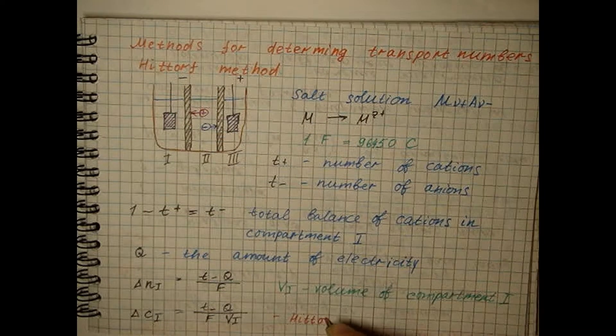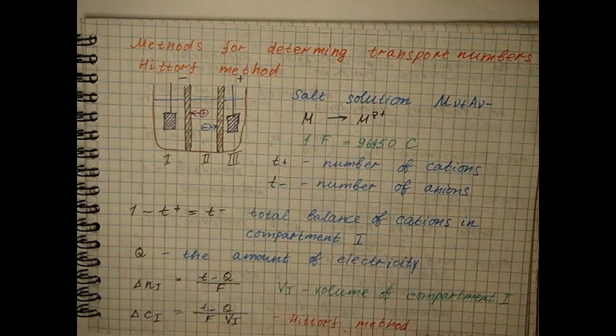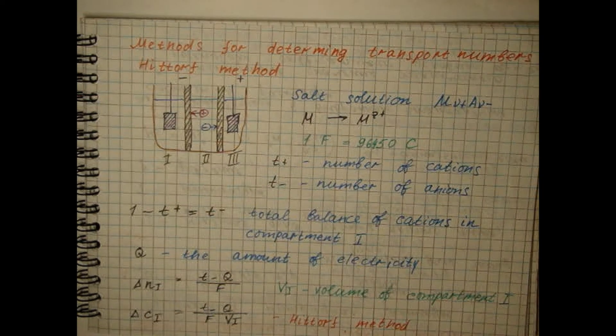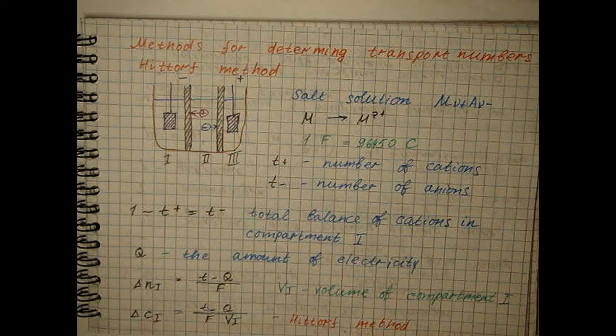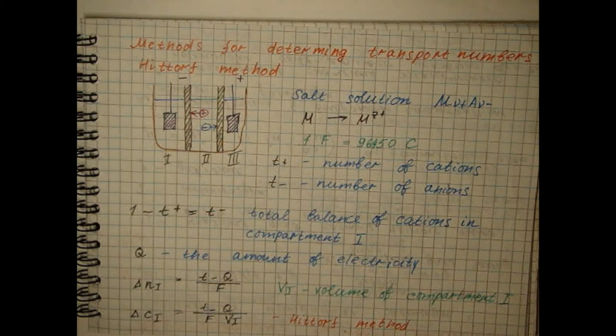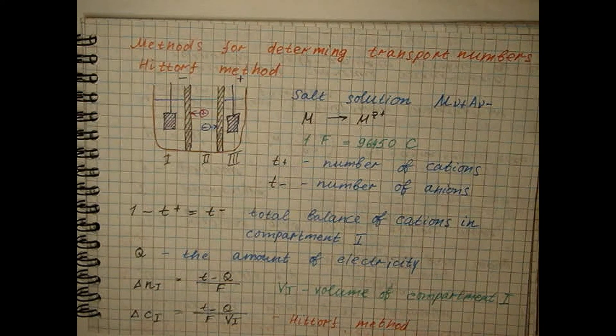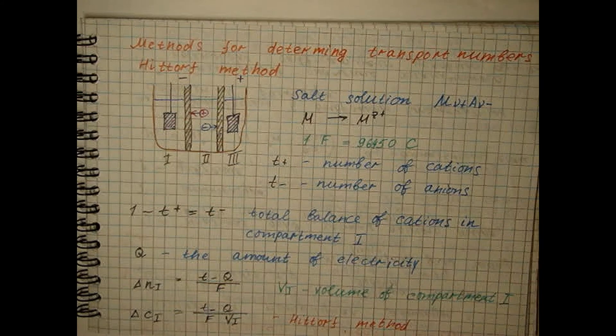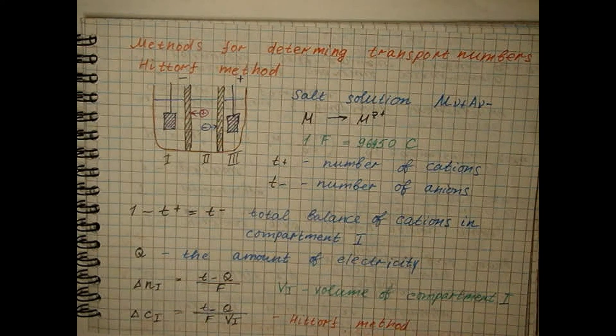This equation underlies the Hittorf method, in which the transport numbers are determined by the change in the concentration of the solution in the near electrode compartment. This equation is approximate, since it does not take into account the process of solvent transfer through the porous membrane that separates compartments one and two.